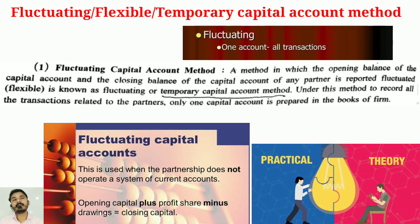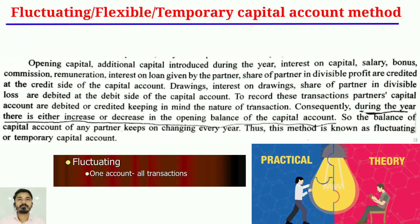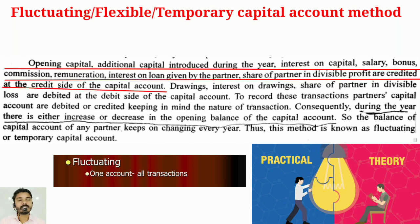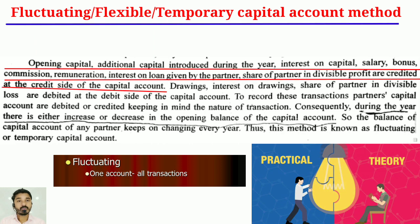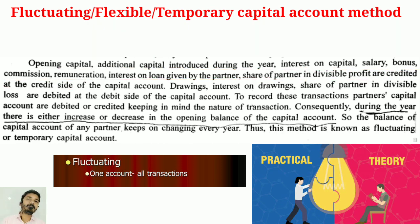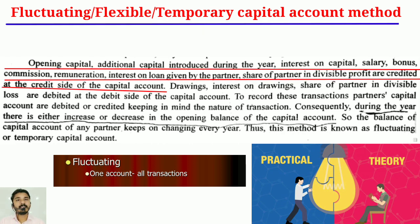The following items are credited at the credit side of the capital account: opening capital, additional capital introduced during the year, interest on capital, salary, bonus, commission, remuneration, interest on loan given by the partner, and the partner's share of divisible profit.